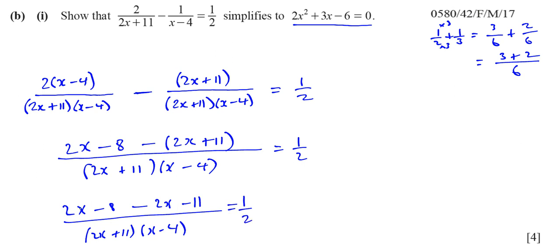And that's over 2x plus 11 times x minus 4, and that's equal to a half. And what's going to happen here, you've got 2x minus 2x, which is 0, and minus 8 minus 11, which is negative 19. So we've got here, negative 19 divided by 2x plus 11 times x minus 4, the other bracket. And that's equal to 1 over 2.